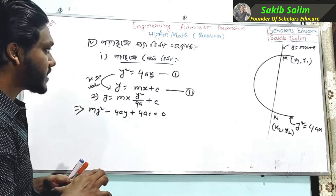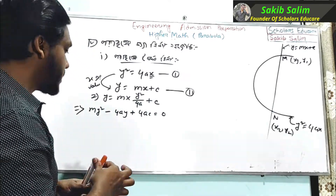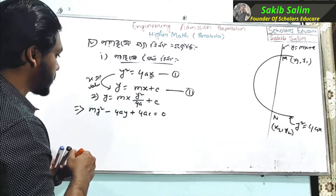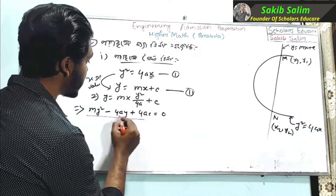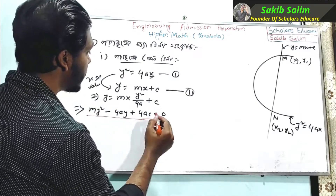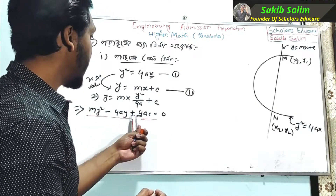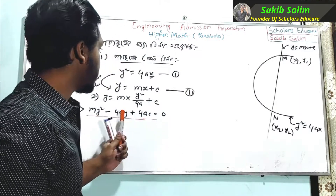So we have: y squared minus 4ay plus 4ac is equal to 0.